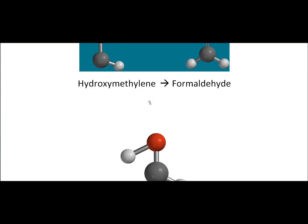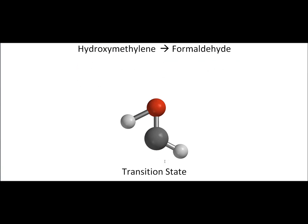The transition state that it goes through is shown here. The hydrogen is moving from the oxygen toward the carbon. This bond will eventually break, and a new bond will form between the carbon and the hydrogen to form formaldehyde.